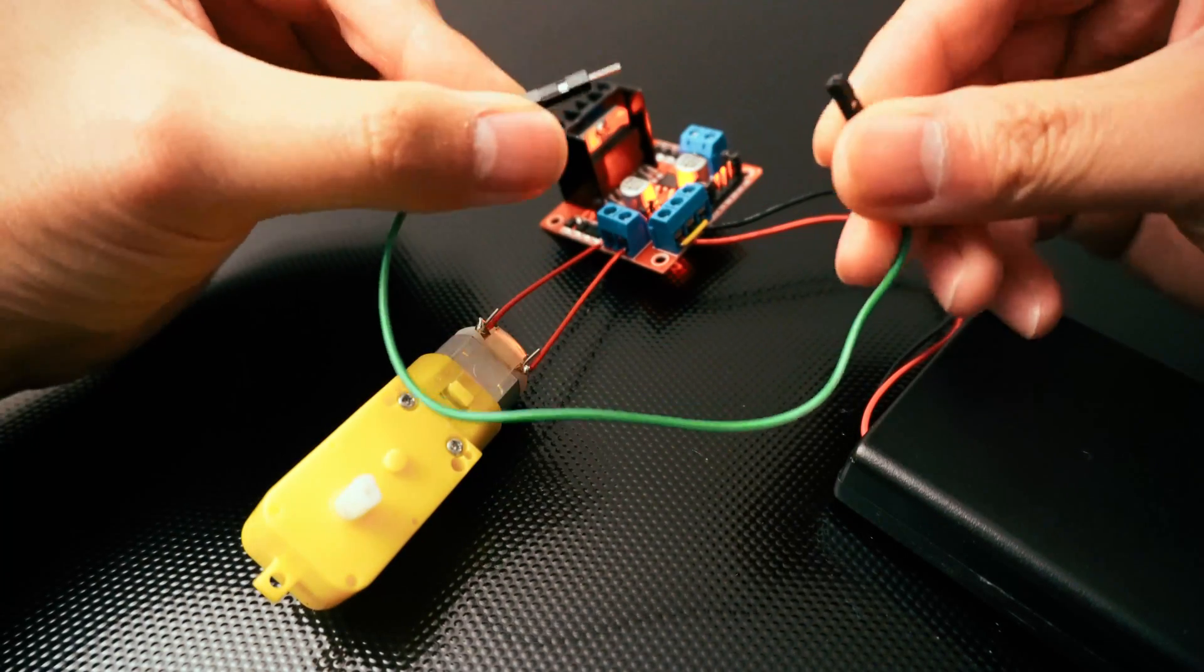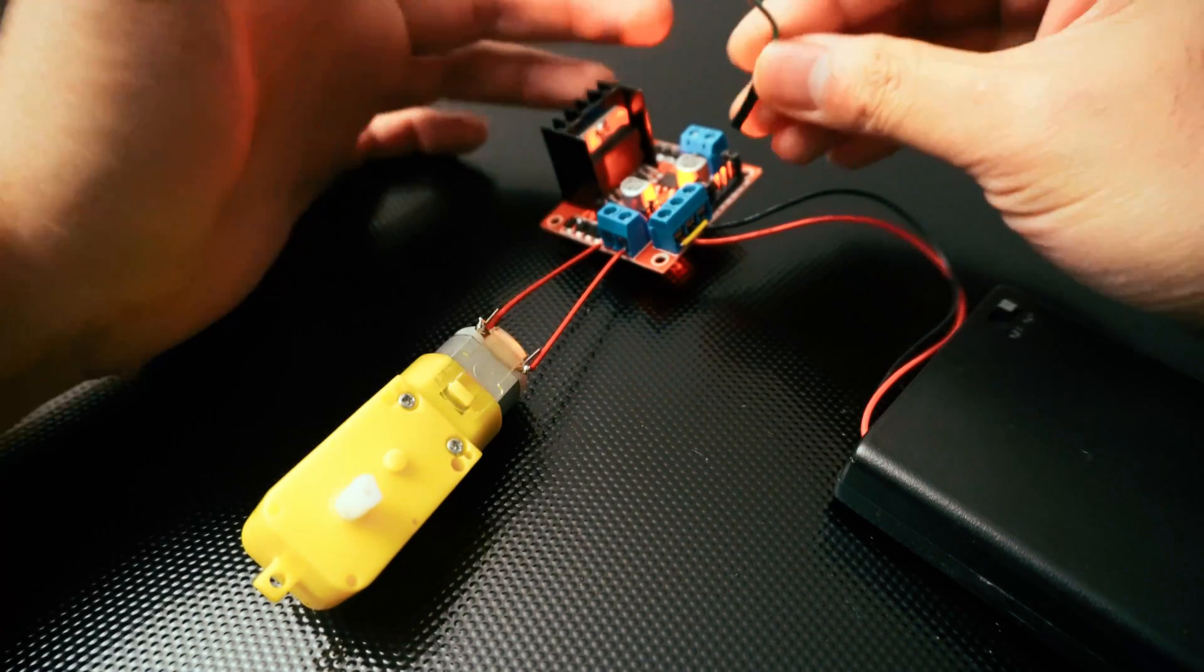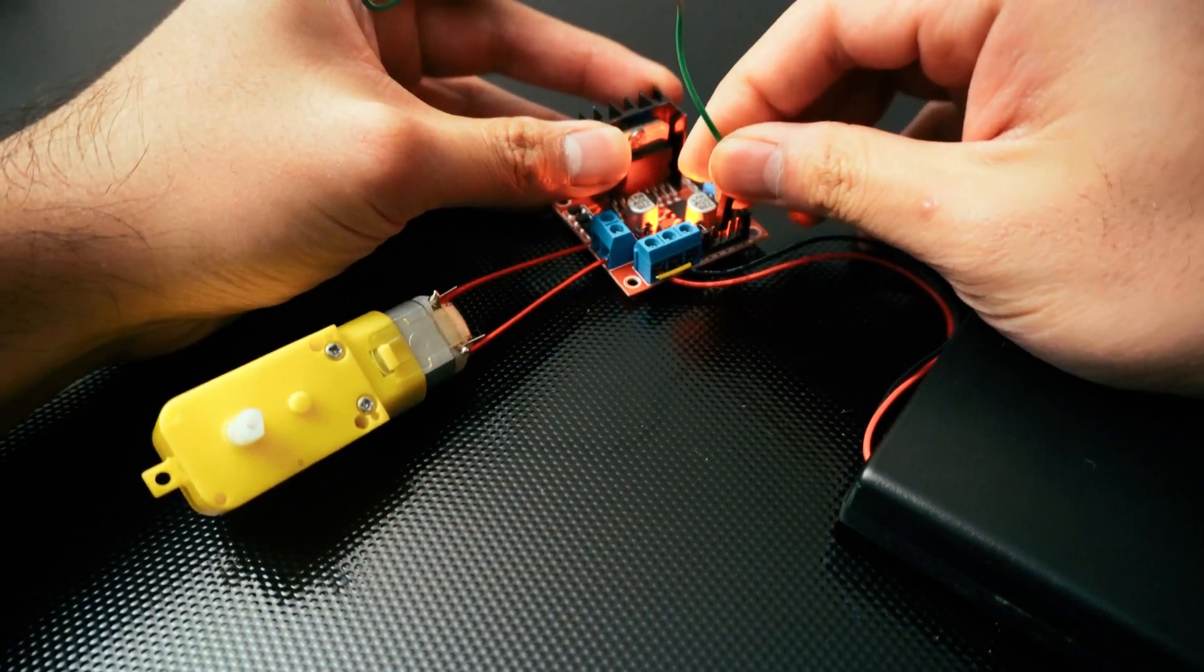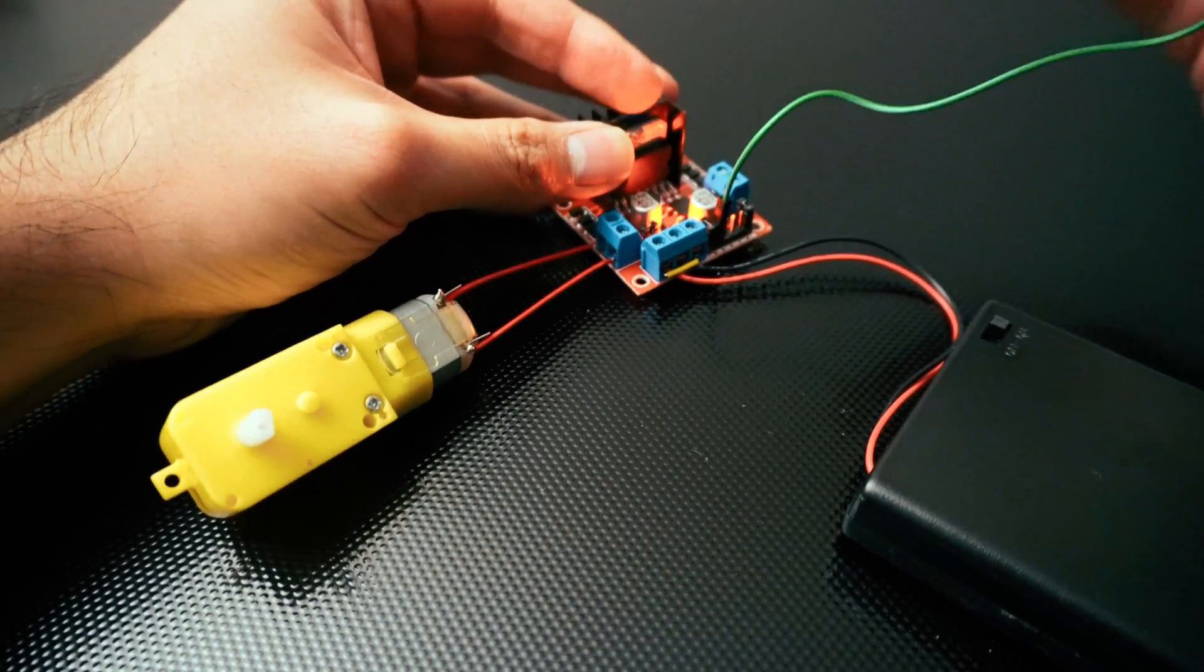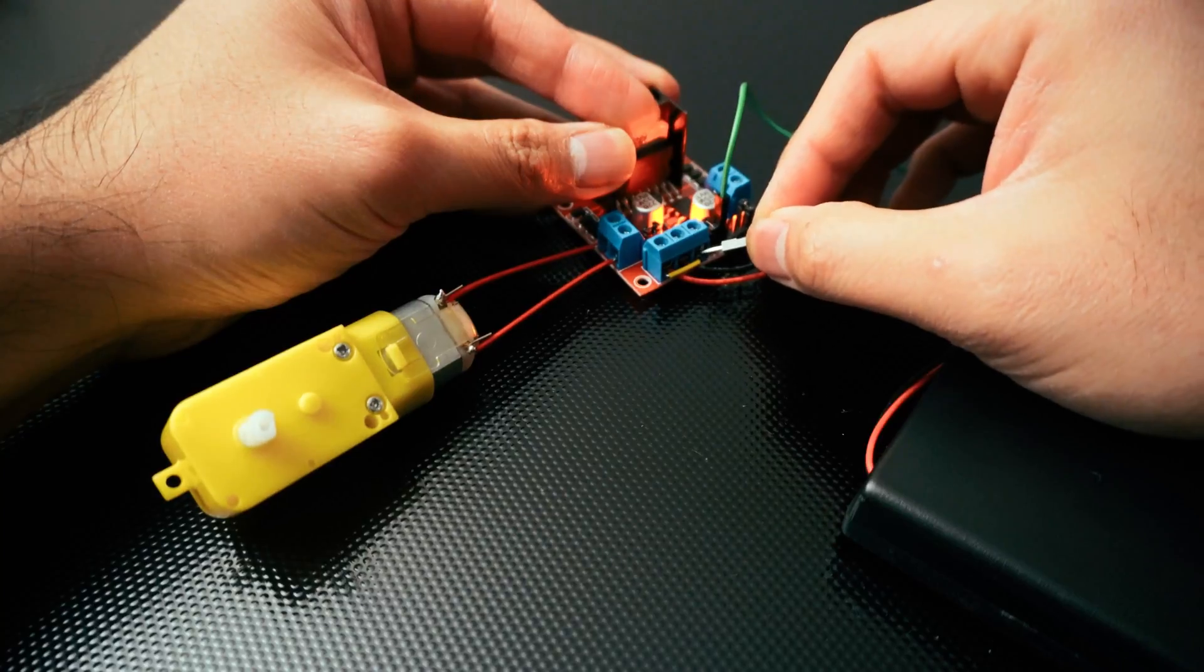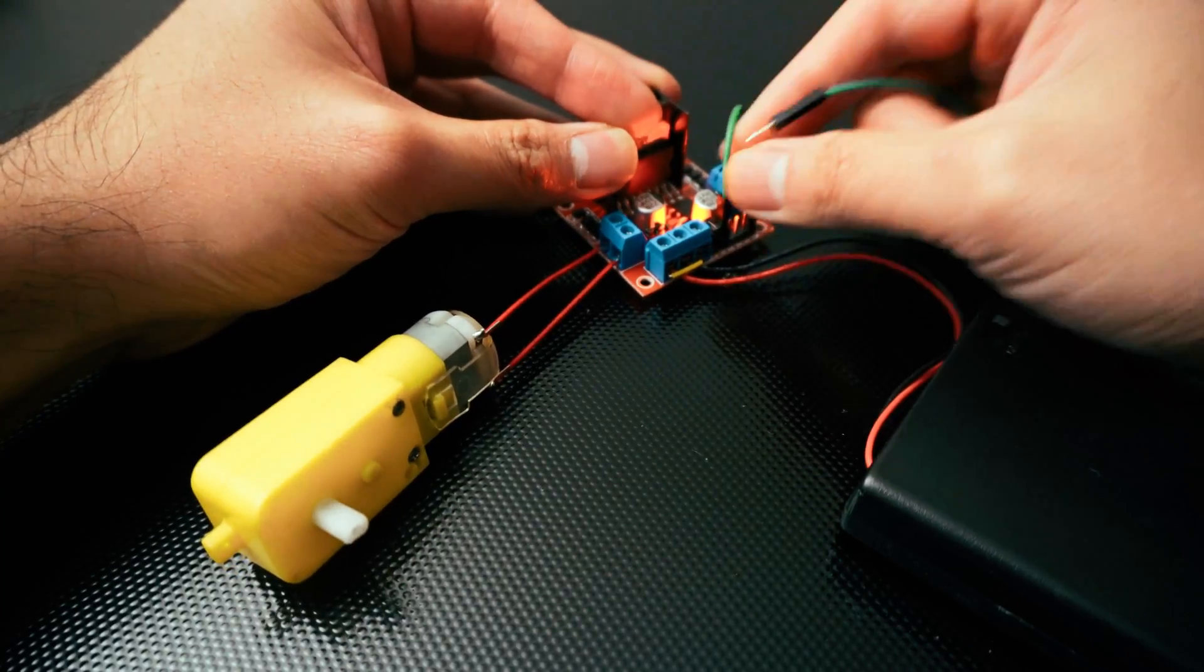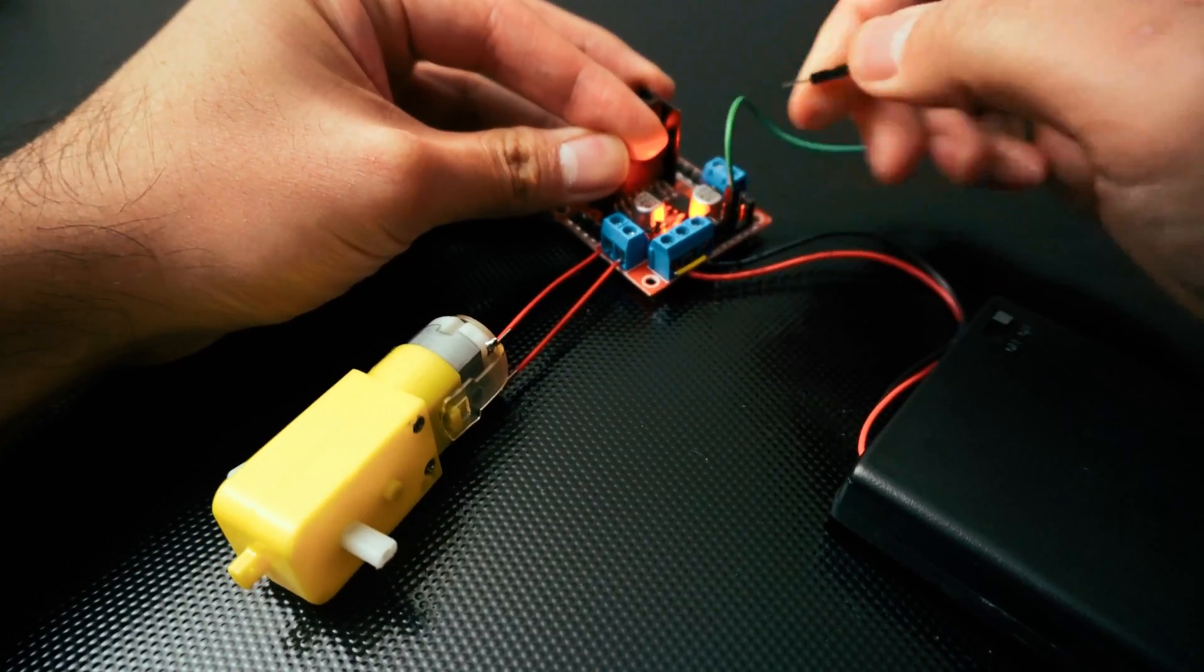A really quick way to test your module is using one of these male to female cables. Since we have motor A connected, just connect the IN1 and 5V, you'll see the motor start running. Move the pin to IN2, it starts to reverse.